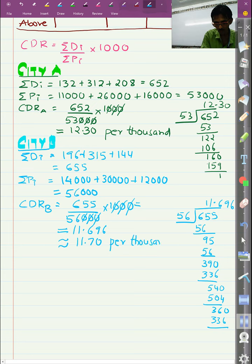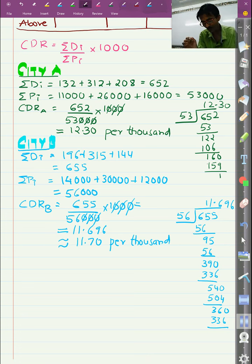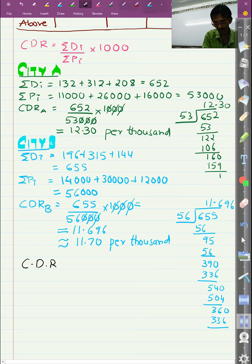So now we observe, we compare the CDR for City A and B. Now CDR for City A is 12.30. CDR for City B is 11.70 per 1000. CDR A is greater. That means in City A there are more death rates. So City B has better living conditions.